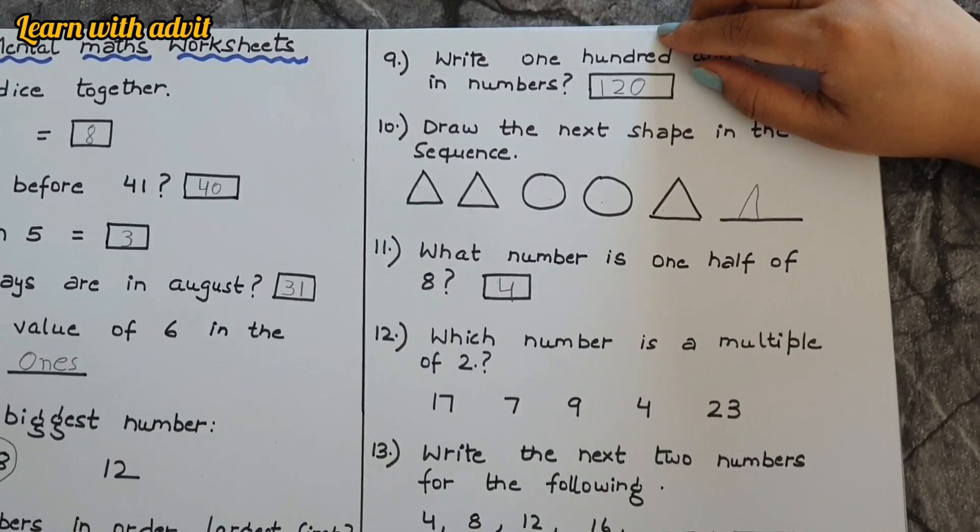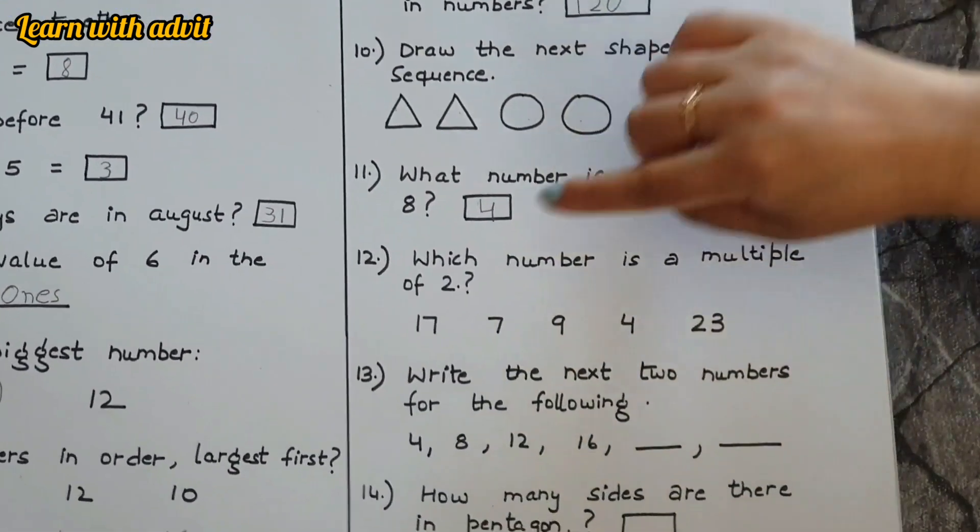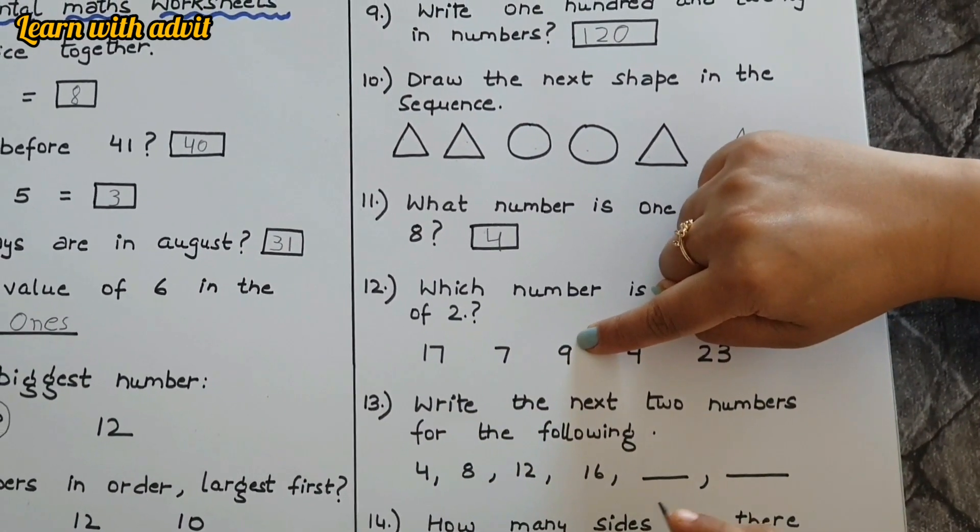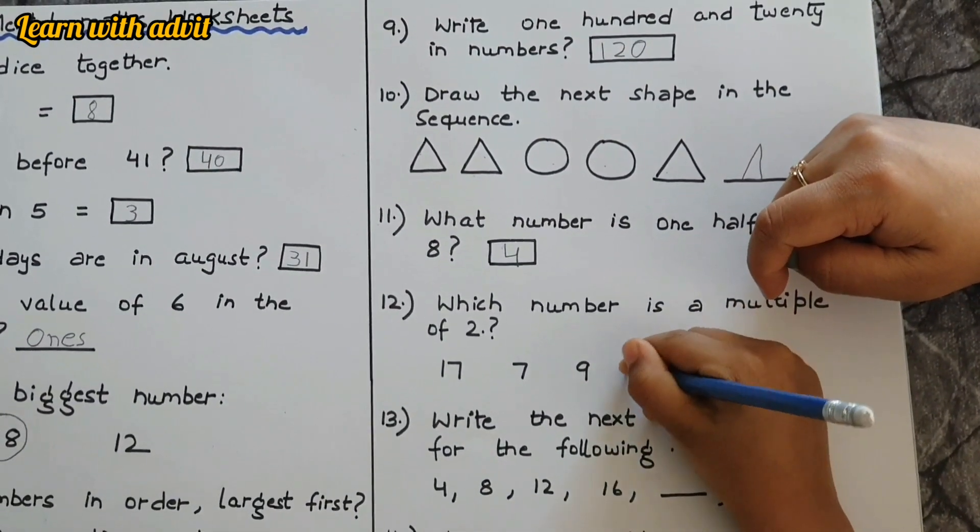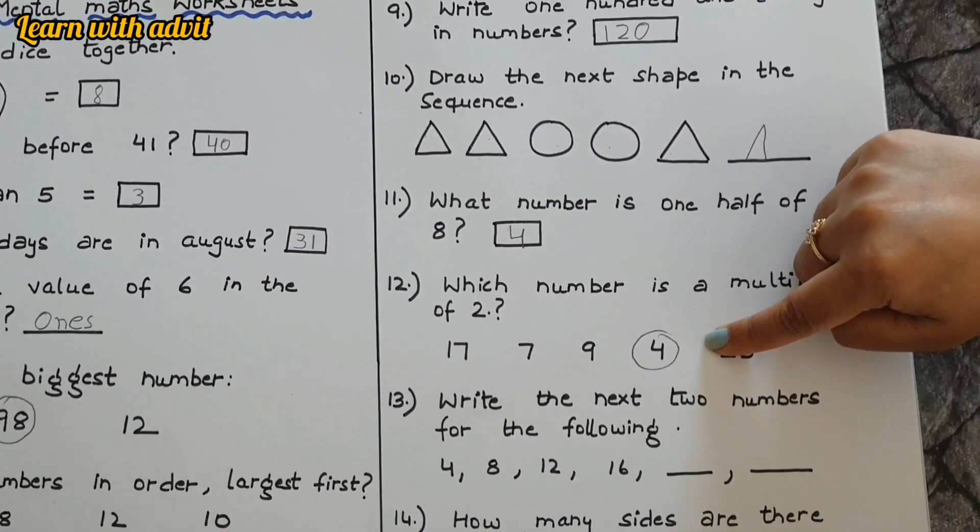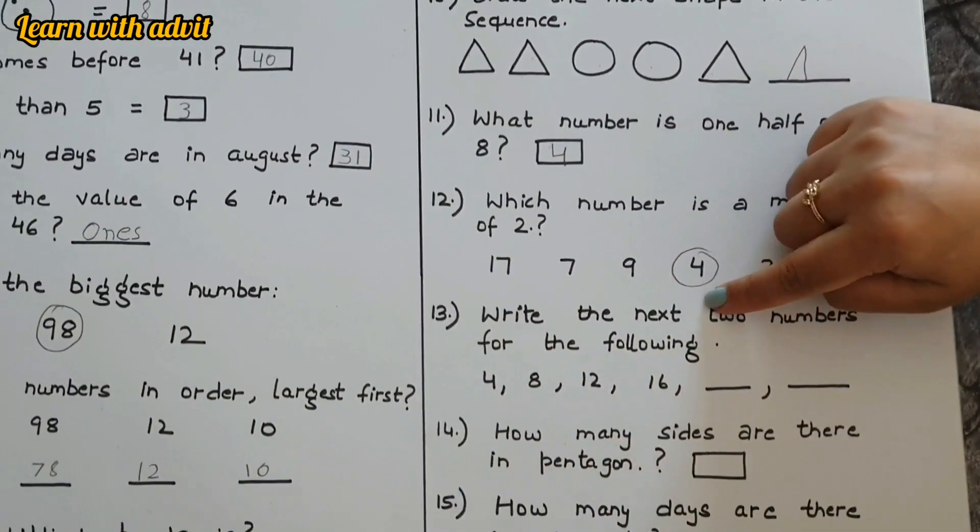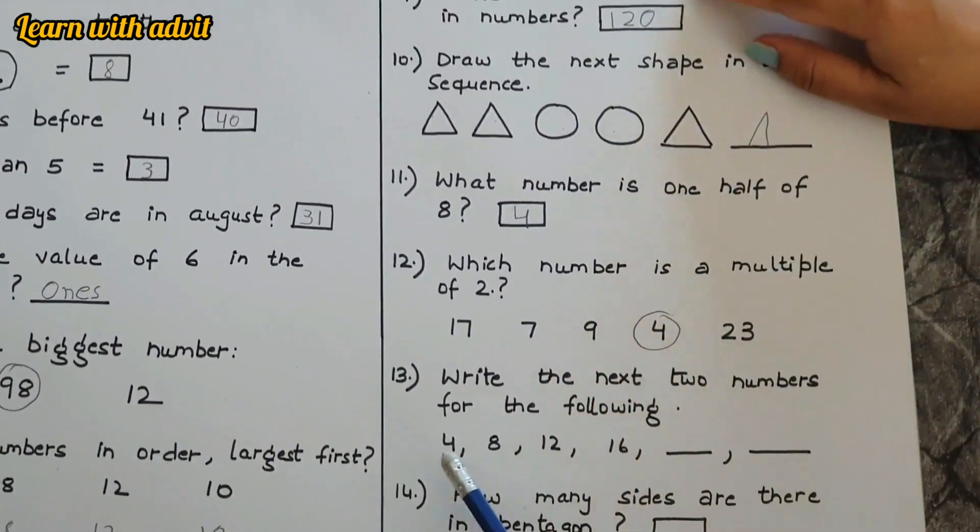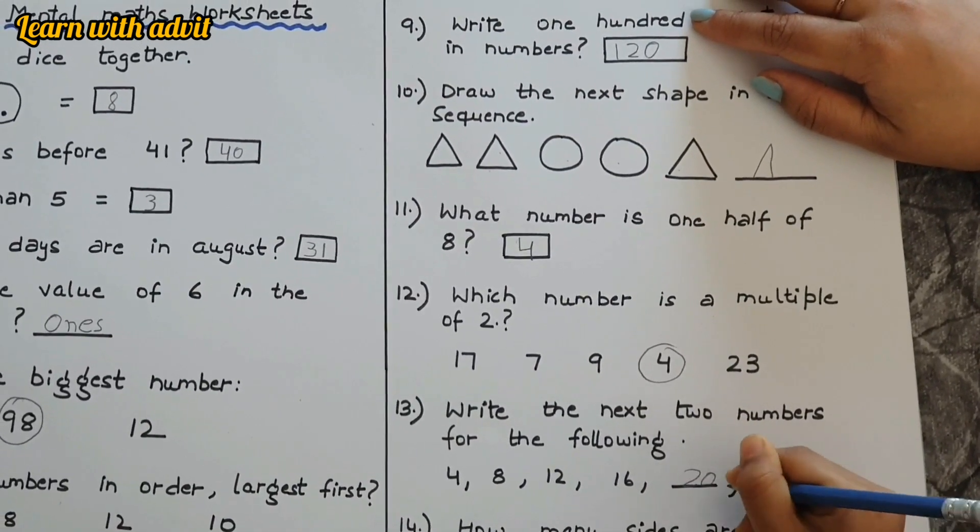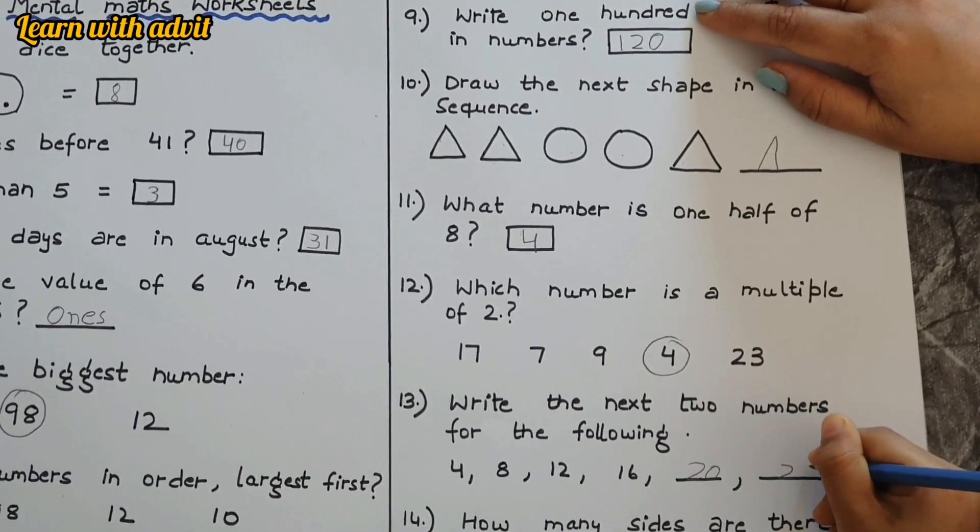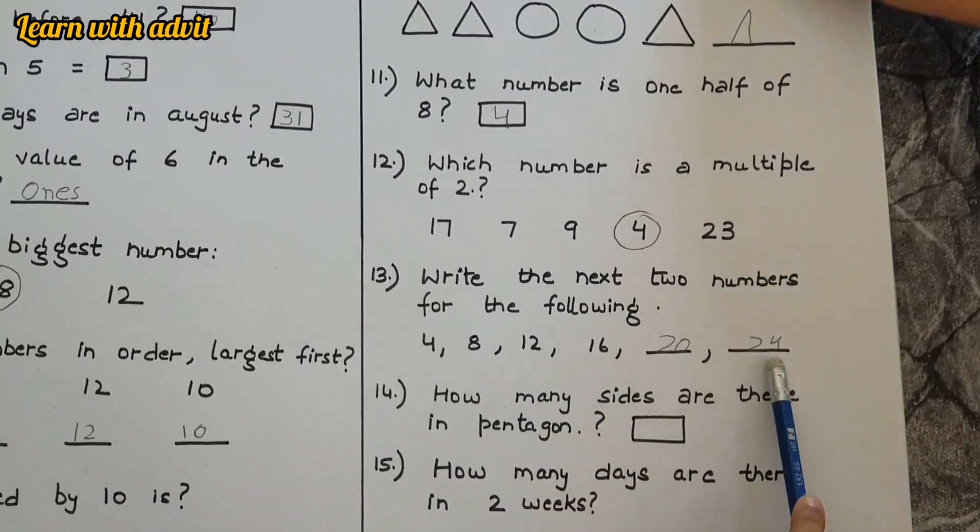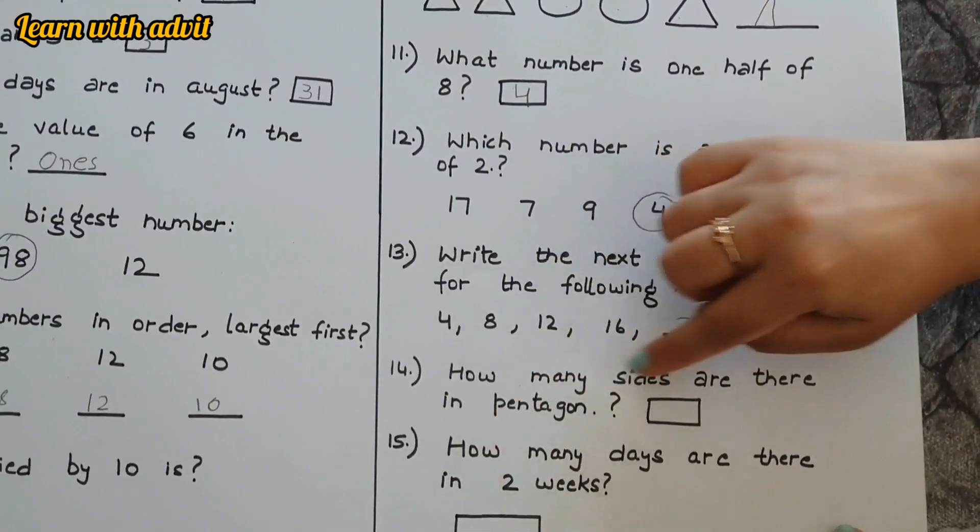One half of 30? 15, because 15 times 2 is 30. Very good. Which number is a multiple of two? Is 17? No. Seven? No. Nine? No. Four? Yes, circle it. Not 23 because all are odd numbers and twos are only even numbers. Very good. Write the next two numbers for the following: 4, 8, 12, 16, 20, 24. That's 4 times 5 and 6 times 4.